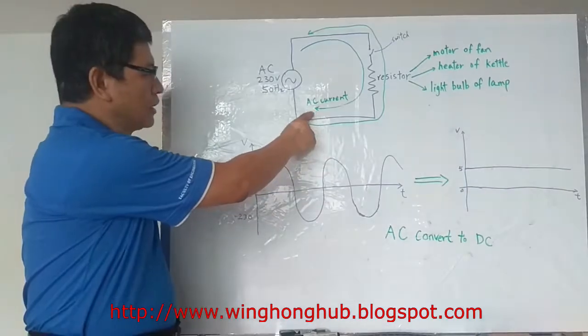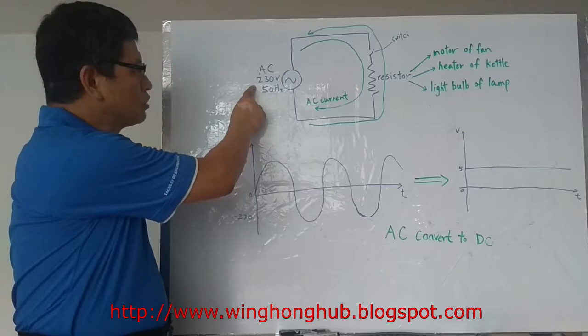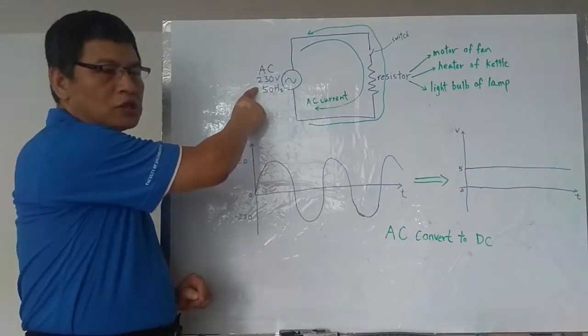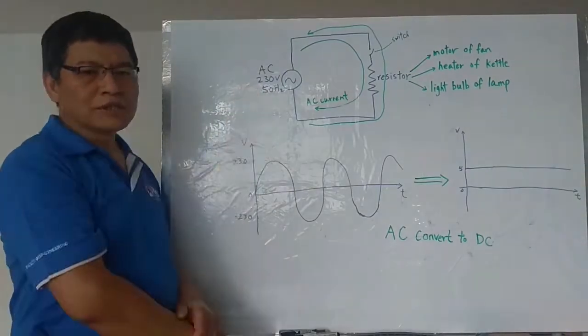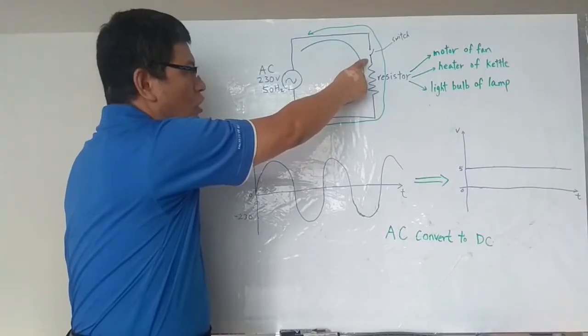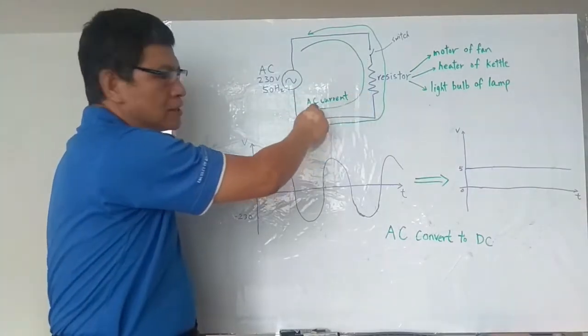This is a simple circuit. The power source is 230 volt, which is from the electrical power station to the residence house. When the switch is turned on, AC current will pass through the resistor.